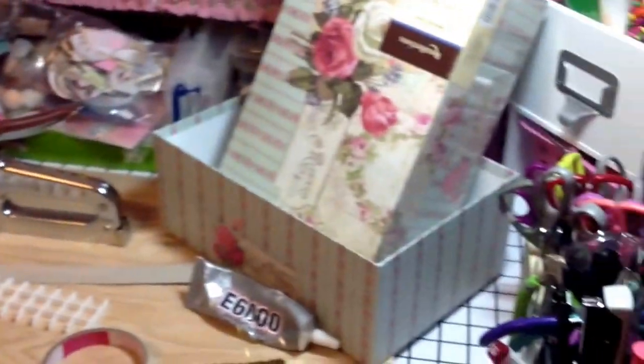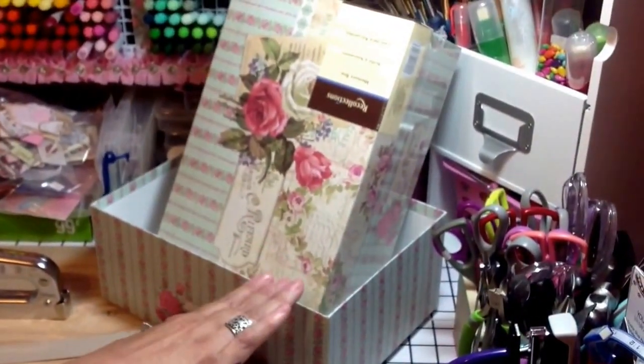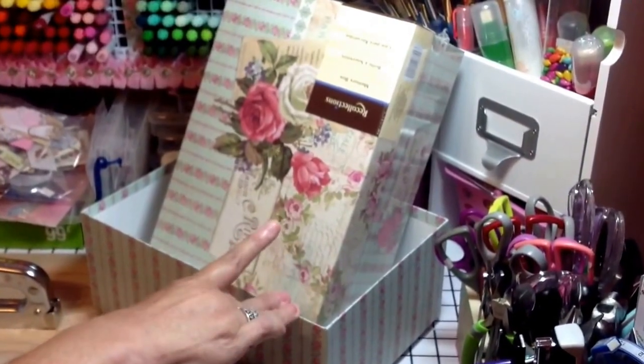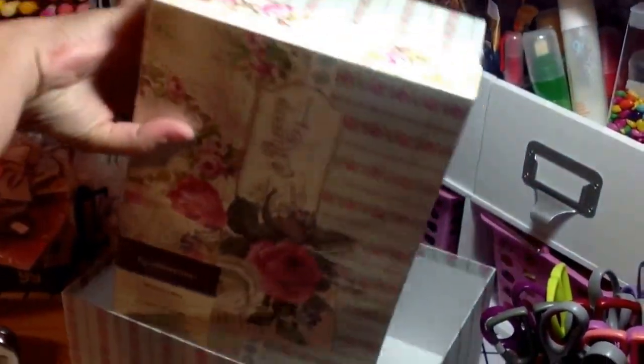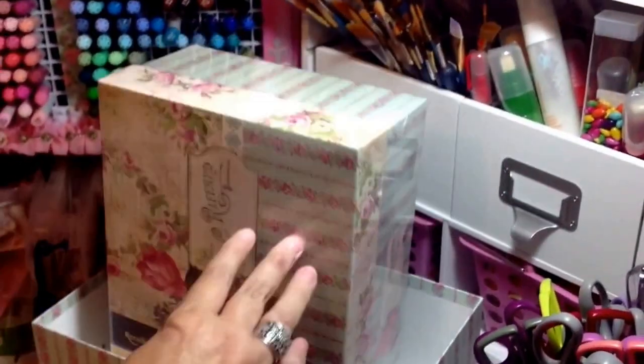Starting out, you will need however many boxes you choose to do. I use six at Michael's, they're called memory boxes. As you can see on here it says memory box. You will need these 6000.